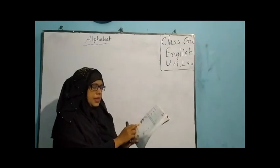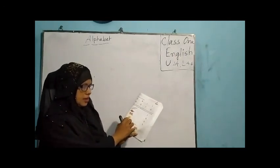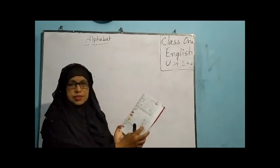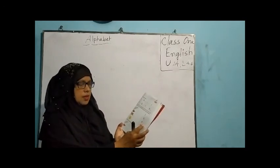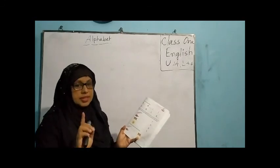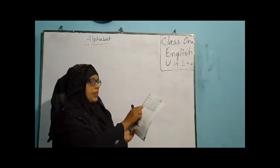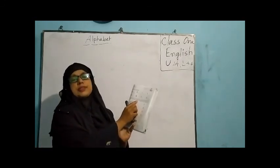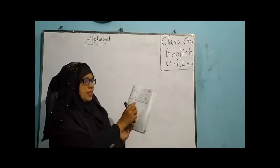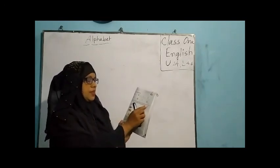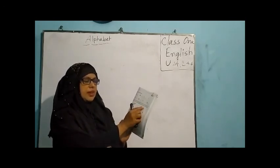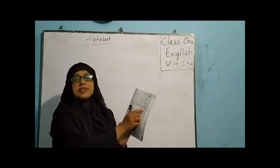In Section B you can see some pictures and some letters. What will you do? Listen to me: say the words for the pictures, say the sound of the first letter of the word, then match the picture with its first letter.